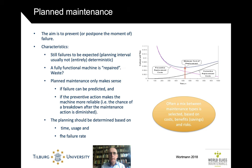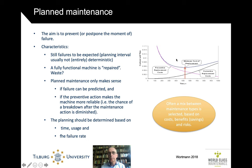With planned maintenance, you plan maintenance ahead of time. The aim is, of course, to prevent or at least postpone the moment of failure. In doing so, you make certain trade-offs. The later that you do the maintenance, the lower the planned maintenance costs, but the higher the corrective maintenance costs, because then the equipment will have broken down.